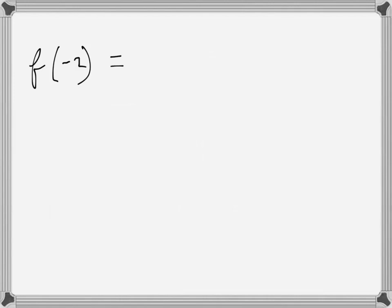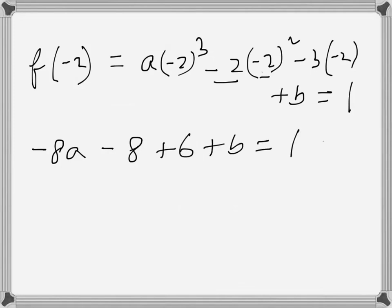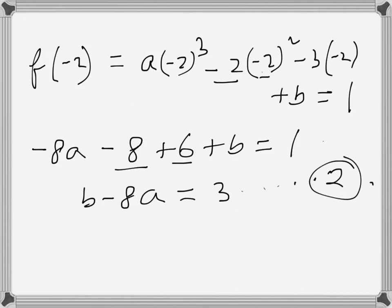Now applying f(-2): a(-2)³ - 2(-2)² - 3(-2) + b = 1. That gives -8a - 8 + 6 + b = 1, so b - 8a = 3. That is the second equation.